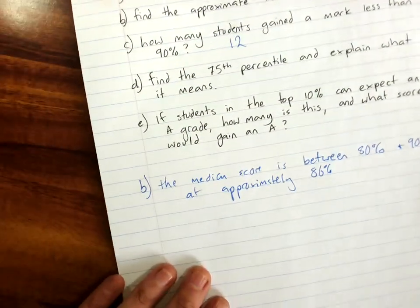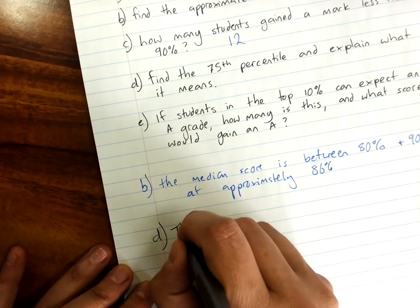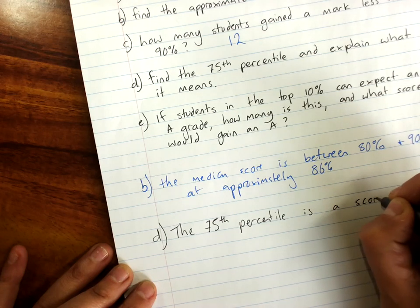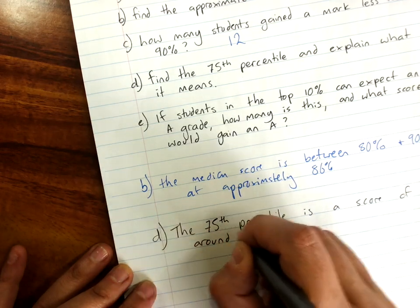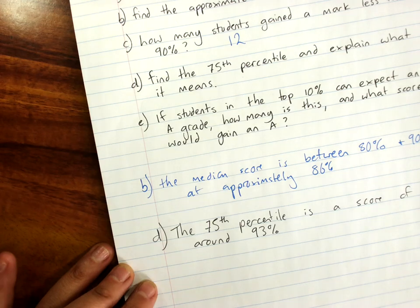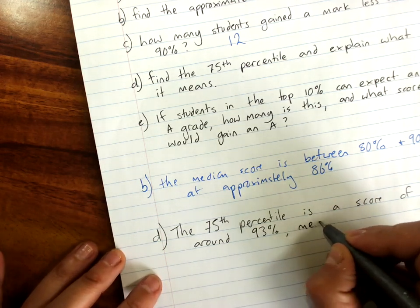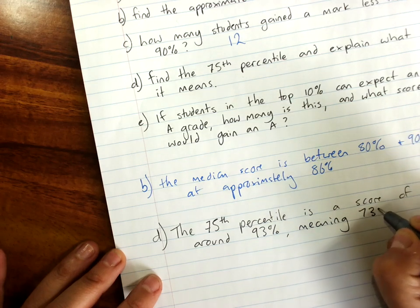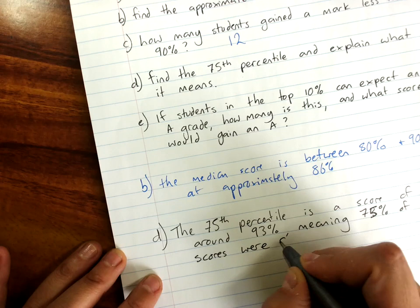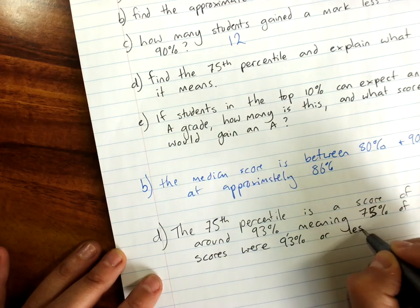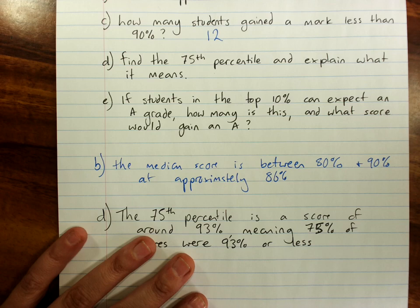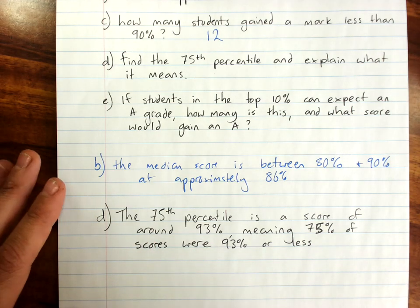What that means at D here, 75th percentile is a score of around 93%. And what that means is 75% of my students got a score of 93% or less. 75% of scores were 93% or less. So, that's what the percentiles mean and how we would interpret them. Let's try not to do that again.